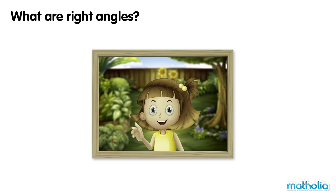What are right angles? Right angles are angles that are formed at the corners of squares and rectangles. This picture frame has a rectangular shape. Right angles are formed at each corner.